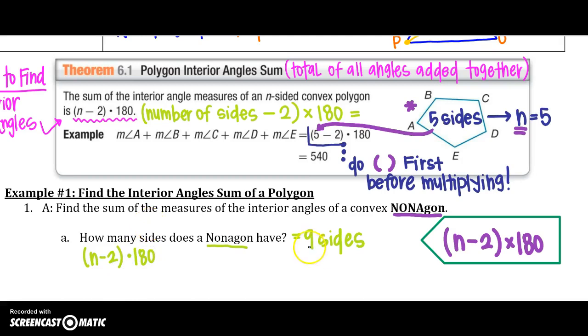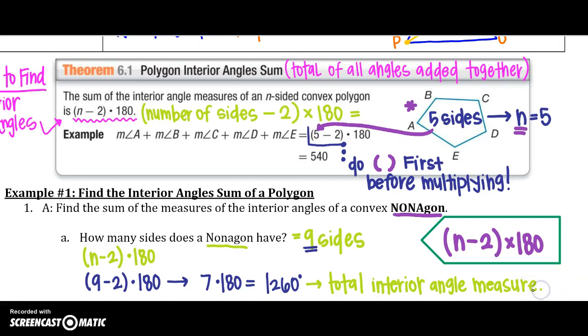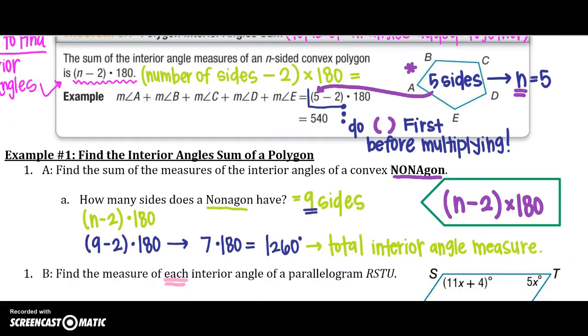So using that equation, we are going to say n minus 2, the number of sides minus 2 times 180 degrees. Well, we know that our n is 9. So we are going to replace n with 9. So 9 minus 2 times 180, which really says 7 times 180. Remember, do those parenthesis first. So I get a 1260. And remember, that number is actually telling us the total interior angle measure. So all of the interior angles added together will be 1260 degrees.